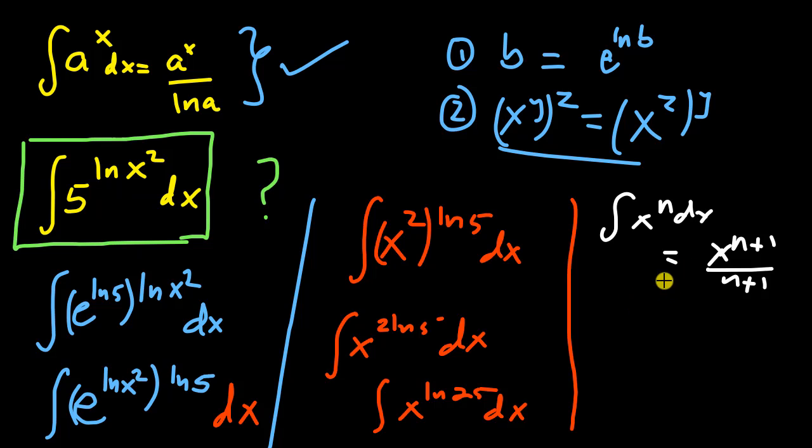So this natural log of 25 is just a number. So there is nothing special with it. So it means the integral of x to the power natural log of 25 dx is going to be x to the power 1 plus natural log of 25 divided by 1 plus the natural log of 25. I just add 1 to the natural log of 25.